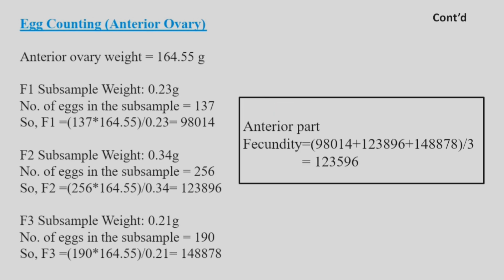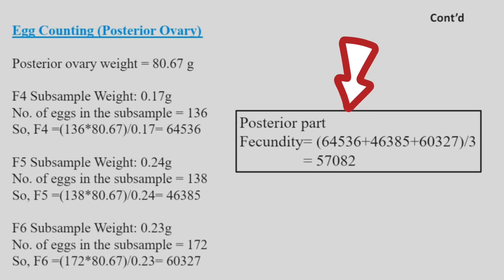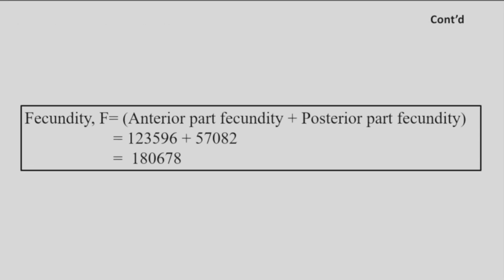Similarly, we calculated F2, F3, and the rest. After calculating fecundity for each subsample, we took the average fecundity of the anterior lobe (F1 to F3) and the posterior lobe (F4 to F6). Finally, the total fecundity was obtained by adding the average fecundity of both lobes, giving a total fecundity of 180,678 eggs.